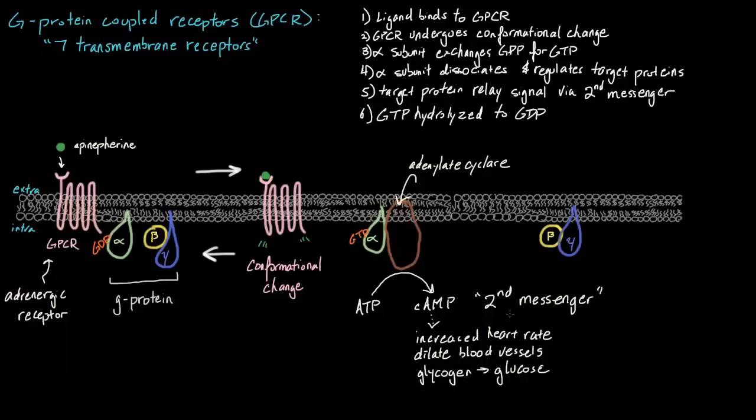Now remember, this is our biggest group of cell membrane receptors. It's a pretty complicated process. Just go over it again. And for example, our epinephrine binds to our GPCR. This GPCR then changes its shape and undergoes a conformational change. It switches out the GDP to GTP on the alpha subunit, which causes our alpha subunit to dissociate, which will then regulate another protein. And this protein will turn ATP into cyclic AMP, which is our second messenger. And this second messenger will now tell our body to do other things.